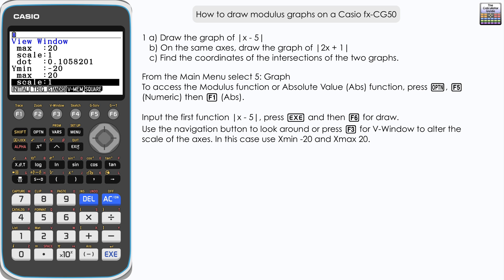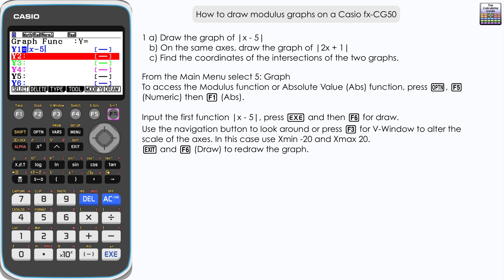Once we've inputted those, execute, exit, and draw. You can see that the scale has altered on the axes. We can see a little bit more of the graph of the modulus of x minus 5. Now let's input a second graph from part B.